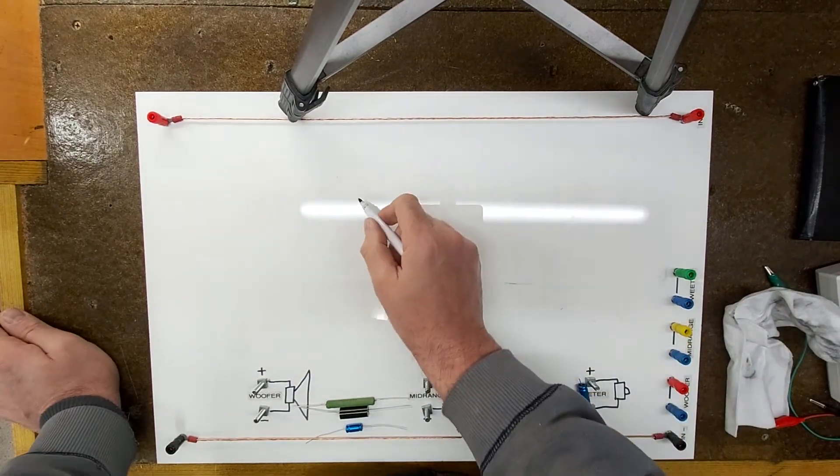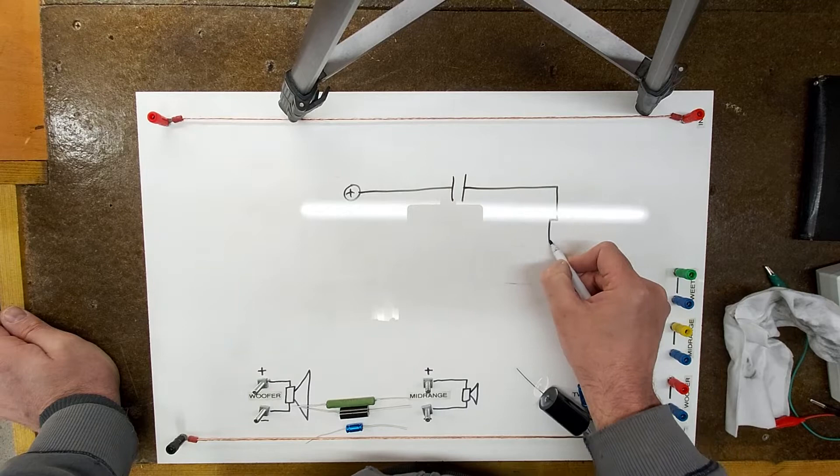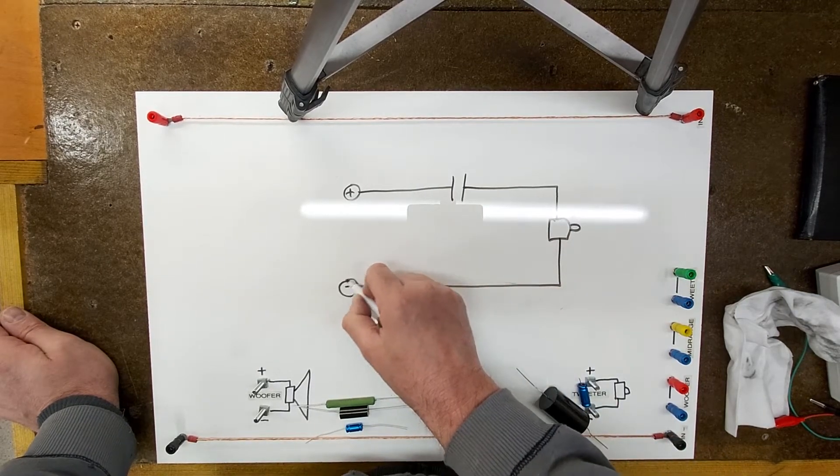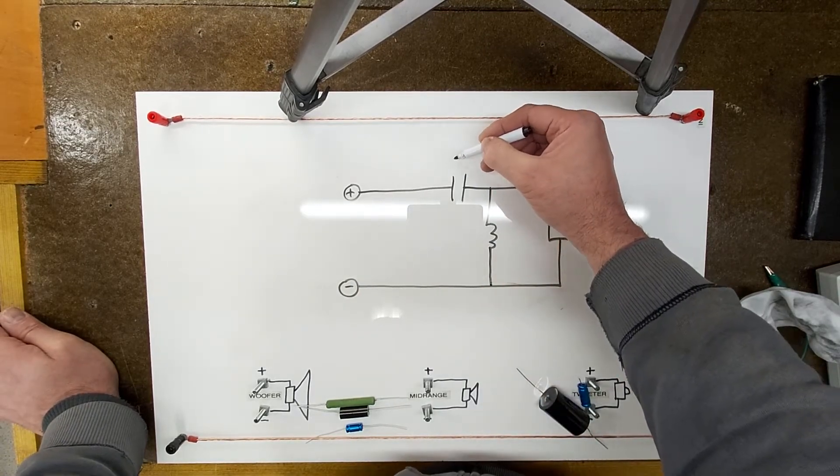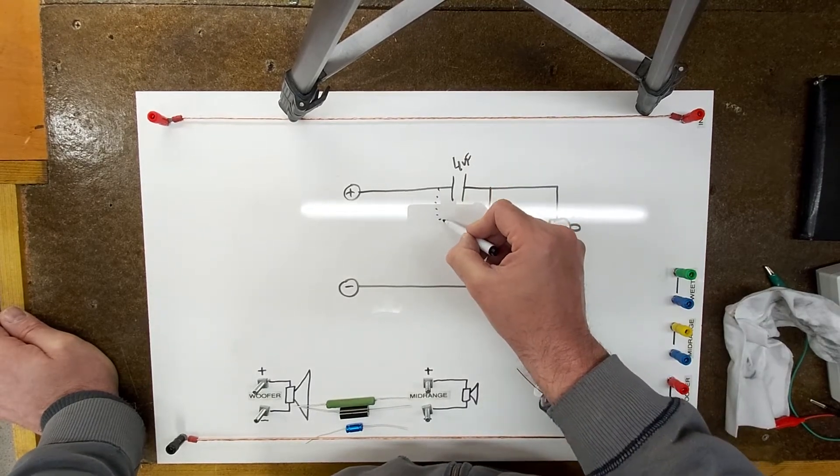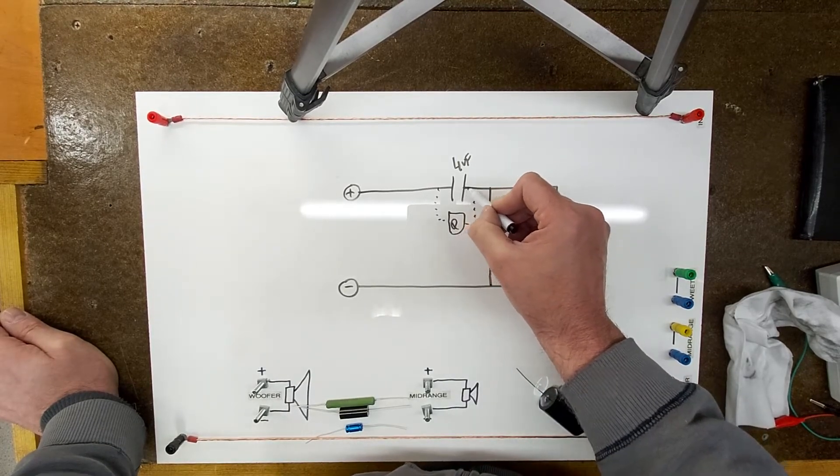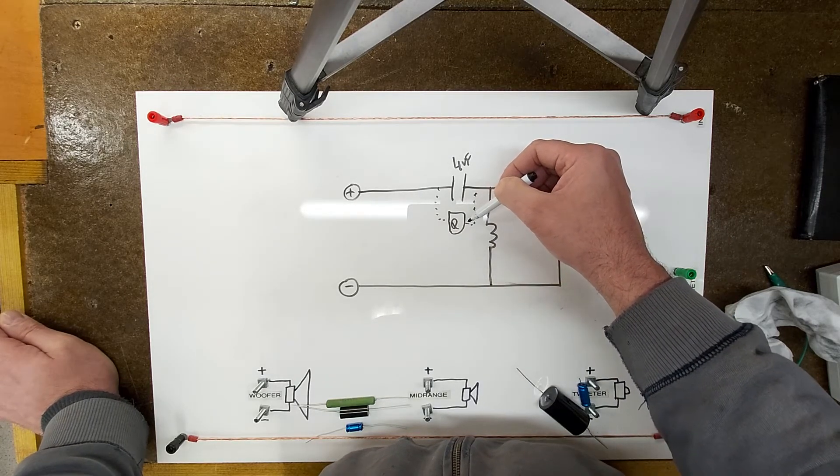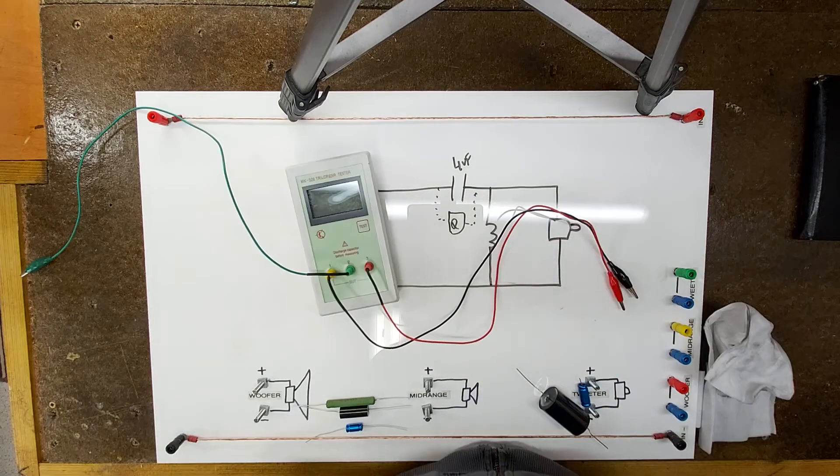So if we look at just a typical tweeter circuit: positive, a capacitor, and then our tweeter, then our tweeter negative. Let's say it's a second order so we've also got an inductor here. Let's say this is a 4 microfarad capacitor. It also has a resistance value, so when this is allowing our tweeter to play this resistance will come into effect and be very critical.